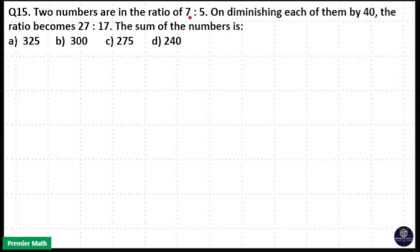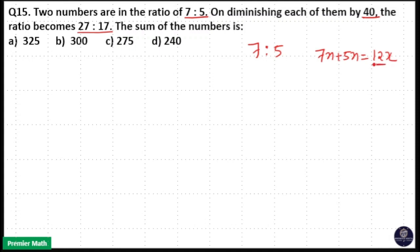Two numbers are in the ratio of 7 is to 5. On diminishing each of them by 14, the ratio becomes 27 is to 17. The sum of these two numbers is 7x plus 5x, equal to 12x, so the sum will be divisible by 12. Options A and C are eliminated — only option B or option D will be the answer.